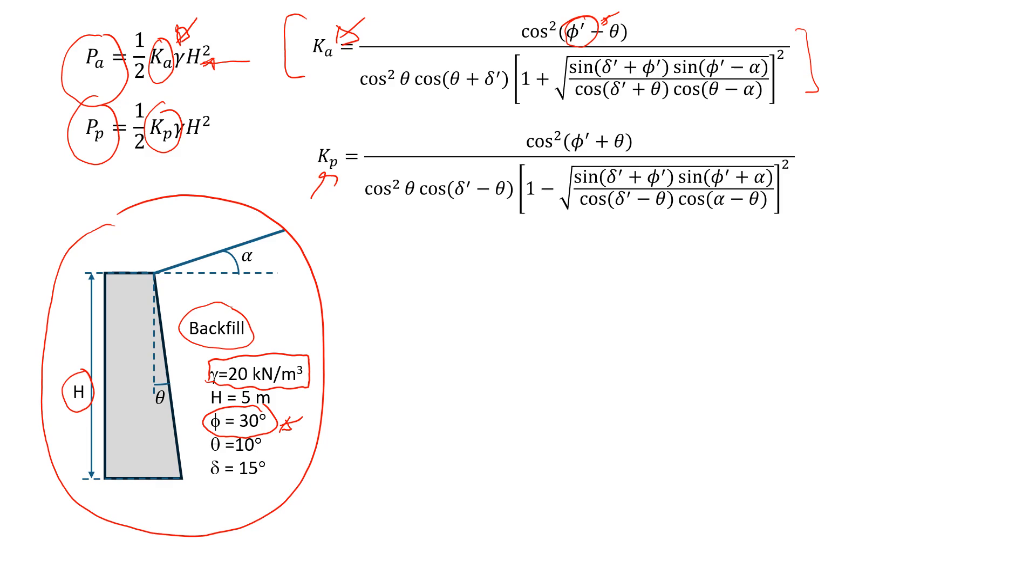So what else do we have? We have this theta. So theta is the angle that we'll have here. This is the retaining wall angle with the backfill. So typically it can vary from zero to maybe 10 degrees. So 0, 5 or 10 degrees would be reasonable numbers.